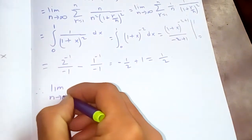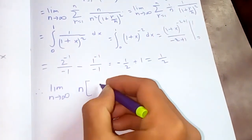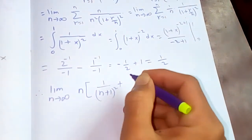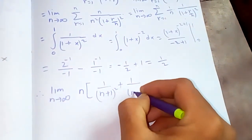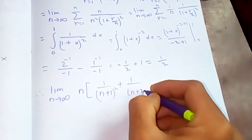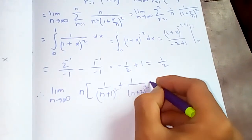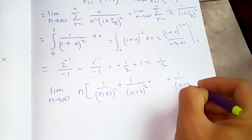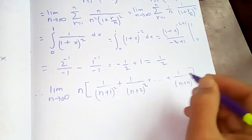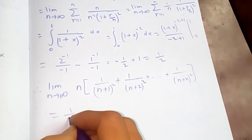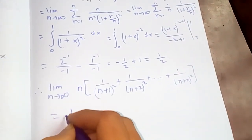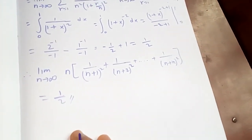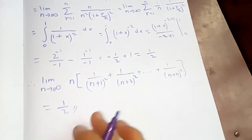So the limit as n tends to infinity of one over (n+1) squared plus one over (n+2) squared, and so on, plus one over (n+n) squared is equal to one half.